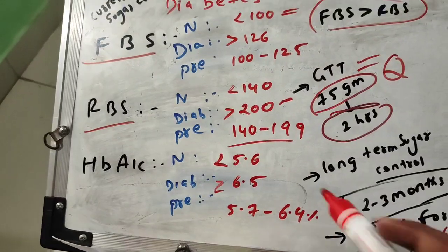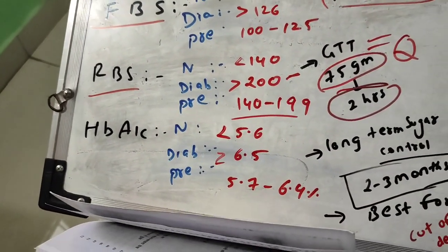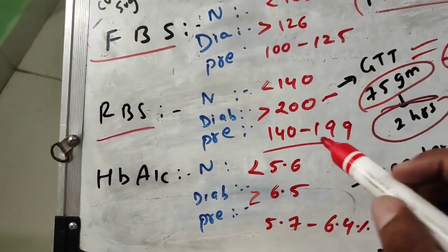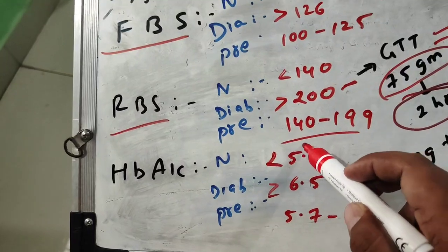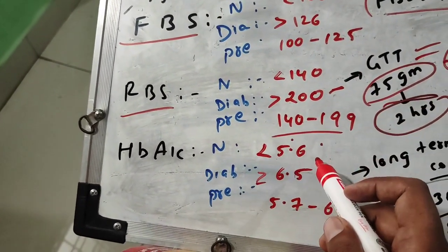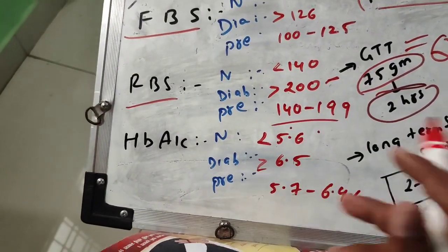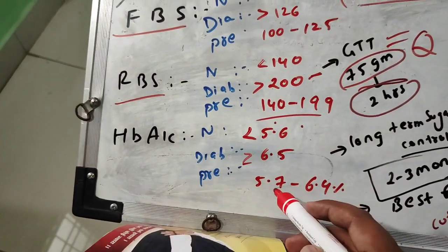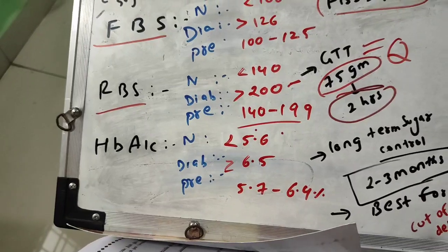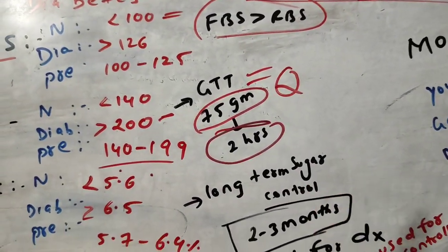For HbA1c: normal is less than 5.6, diabetic is more than 6.5. Remember: 5.6 is normal but 6.5 is diabetic. Pre-diabetic is 5.7 to 6.4. A helpful mnemonic: 'panja chakka' (5.6) is normal but 'chakka panja' (6.5) is diabetic.